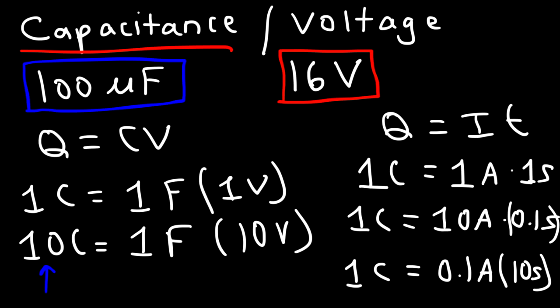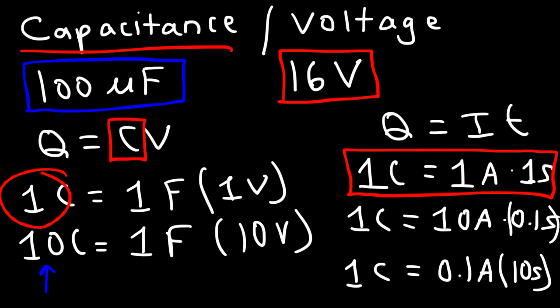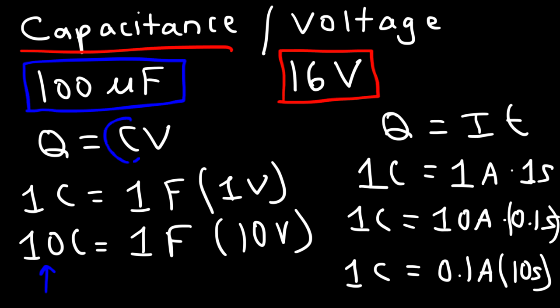So the less current that it emits it can do so for a longer period of time. Hopefully this helps you to see the relationship between capacitance which is measured in farads with electric charge. And hopefully you'll see the relationship between how electric charge is related to the amount of current that a capacitor can emit for a given time period. But basically the higher this number is the more energy that the capacitor can store.